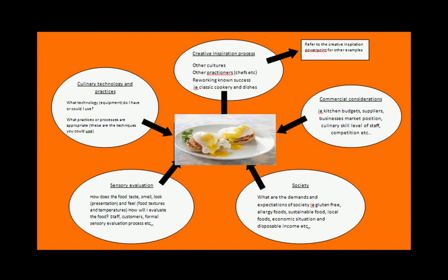So if you were putting Eggs Benedict on the menu and thinking about what's happening in society at the moment, you might be thinking about things like: if local food is really important in your menu design, would you see if the ham or bacon was a local ingredient? Would you be considering that society demands gluten-free is an option, so would you look at having maybe gluten-free muffin bases or bread available? Would you be thinking about nutrition and healthy food options — for example, would you serve the hollandaise sauce over the eggs, or would you serve it to the side?